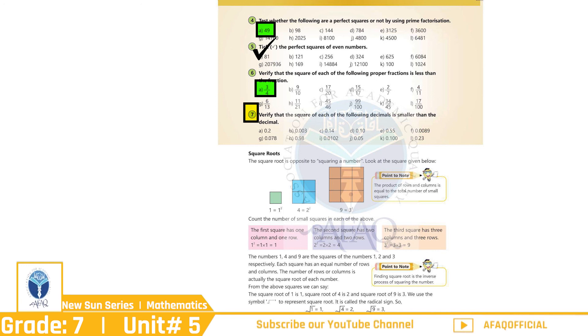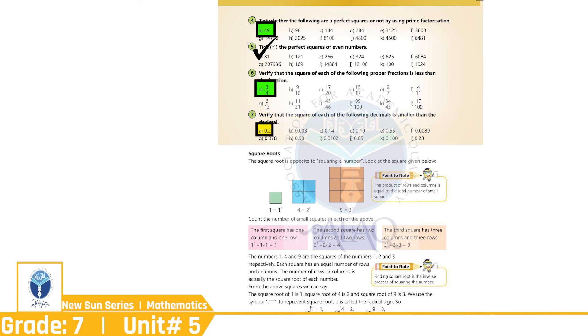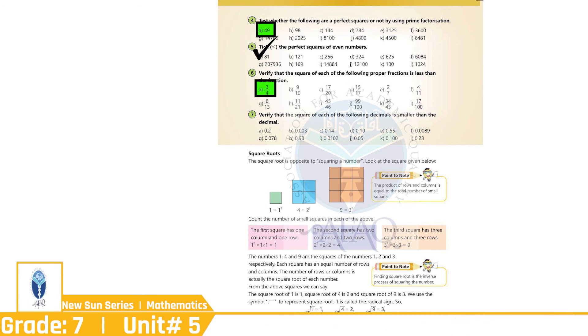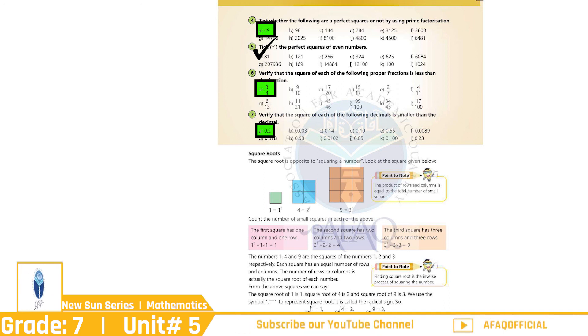Question No. 7: Verify that the square of each of the following decimals is smaller than the decimal. A. 0.2 — بچو، اگر ہم 0.2 کا square لیں گے تو ہمارے پاس جواب آتا ہے 0.04۔ اگر آپ غور کریں تو 0.04 ایک چھوٹا نمبر ہے 0.2 سے۔ اس طرح سے اگلے سوال آپ نے خود حل کرنے ہیں۔ You have done a great job.